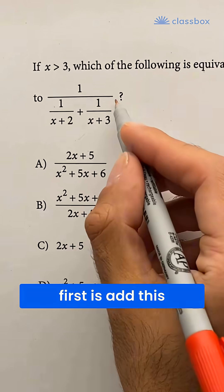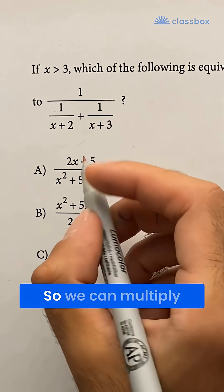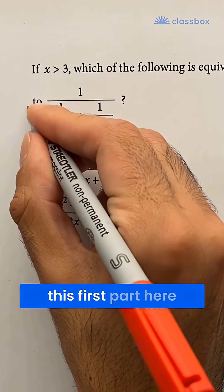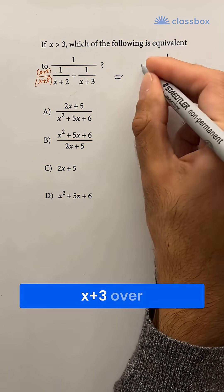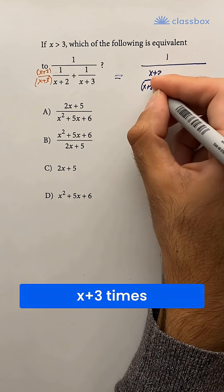What we need to do first is add this expression in the denominator. So we can multiply this first part here by x plus 3 over x plus 3. That's just 1. That gives us x plus 3 over x plus 3 times x plus 2.